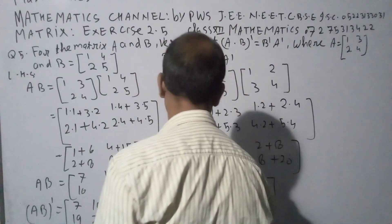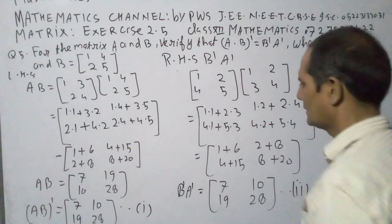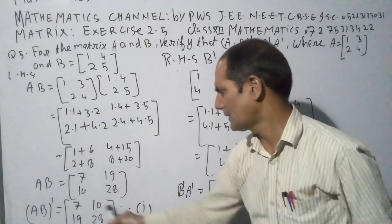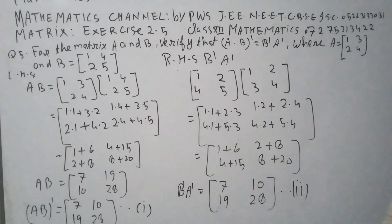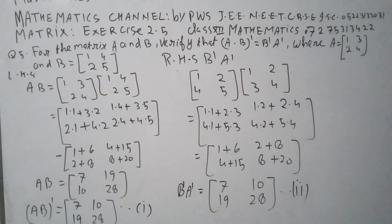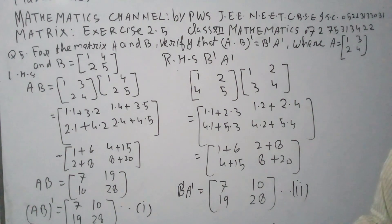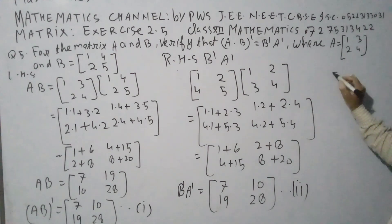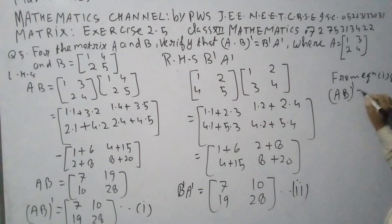We have B transpose into A transpose. From equation 1 and equation 2, AB whole transpose has first row 7 and 19, second row 10 and 28. B transpose A transpose also has first row 7 and 19, second row 10 and 28. So from equations 1 and 2, AB whole transpose equals B transpose into A transpose. Hence proved.